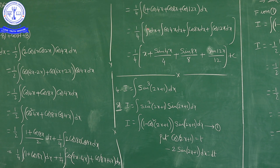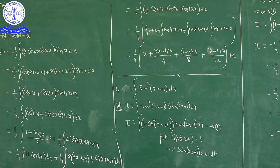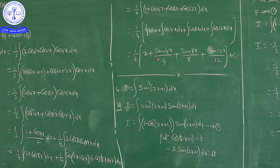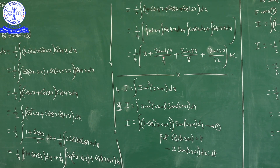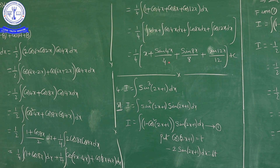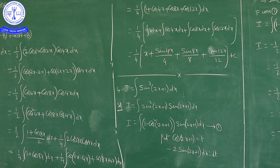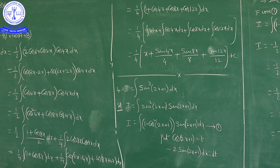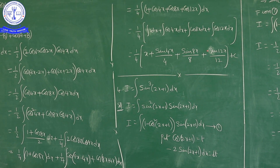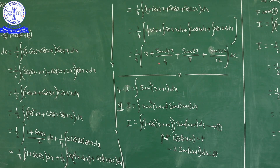The integral of a sum of functions is the sum of individual integrations. So: integration of 1 dx is x, cos(4x) integrates to sin(4x)/4, cos(8x) integrates to sin(8x)/8, cos(12x) integrates to sin(12x)/12. Final answer: (1/4)[x + sin(4x)/4 + sin(8x)/8 + sin(12x)/12] + C.